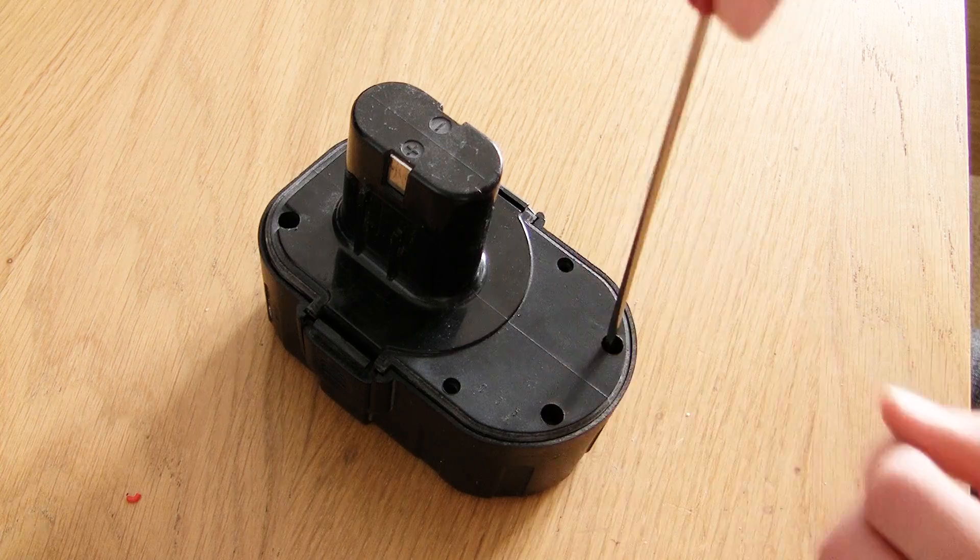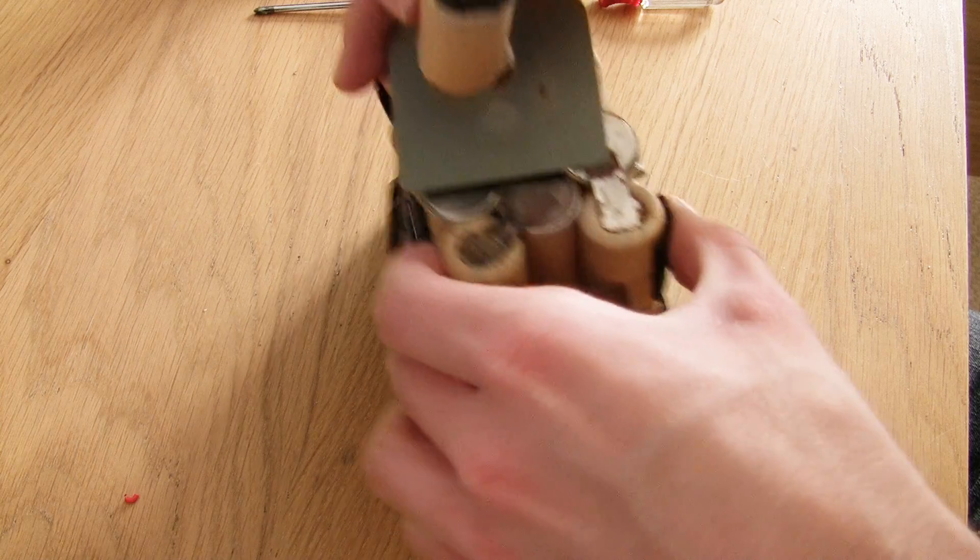Now get your old drill battery and open it up removing the old cells. Retrieve the contacts as we'll need them later.